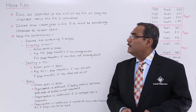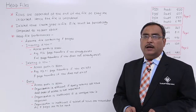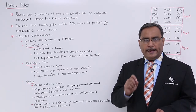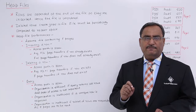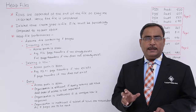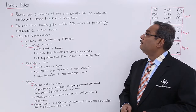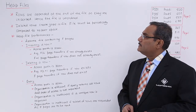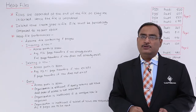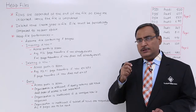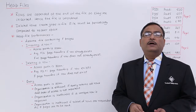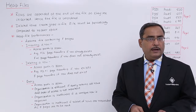Rows are appended at the end of the heap file. Whenever you are performing any kind of insert operation to a heap file, the new row will be appended at the end. As they are inserted this way, the file will remain unsorted, since new records always get inserted at the end.